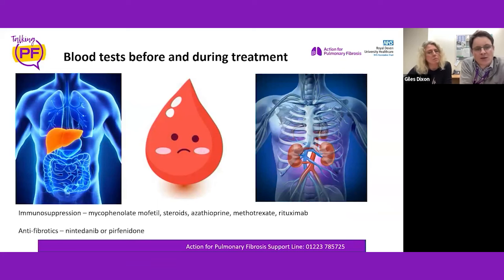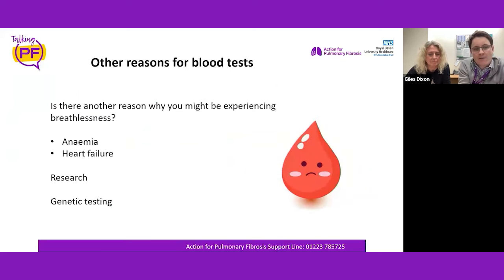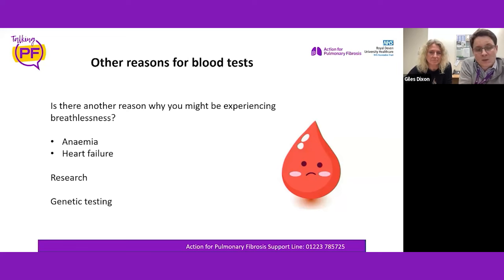Before immunosuppressive treatment, we check that the liver, kidneys, and blood or bone marrow are working well. When on treatment — whether immunosuppression or antifibrotics — we monitor the liver, kidneys, and blood for side effects. We also look for other causes of breathlessness such as anaemia or heart failure indicators. Research is also important: patients may be asked to donate blood samples to look for causes of pulmonary fibrosis and better diagnostic methods.